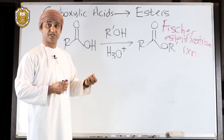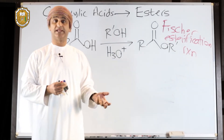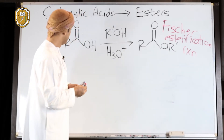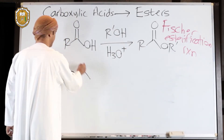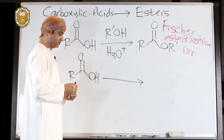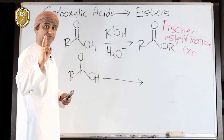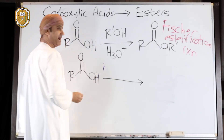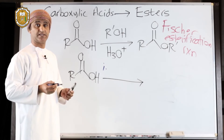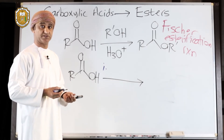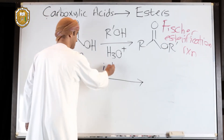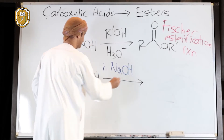Another way to esterify carboxylic acids is to initially convert them into their carboxylate ions, and subsequently react the carboxylate ion with an alkyl halide in an SN2-type reaction to give the corresponding ester. This second method consists of two steps. The first step is reaction with a mild base to deprotonate the carboxylic acid, since carboxylic acids are acidic enough to be deprotonated by even a mild base.